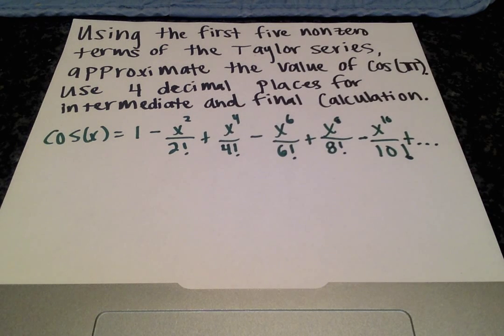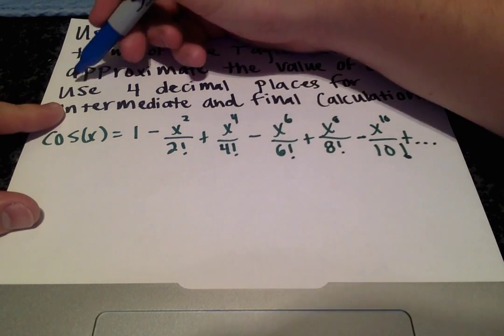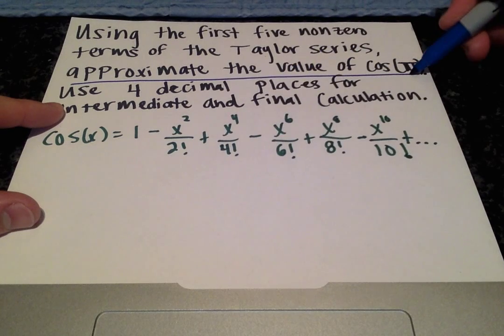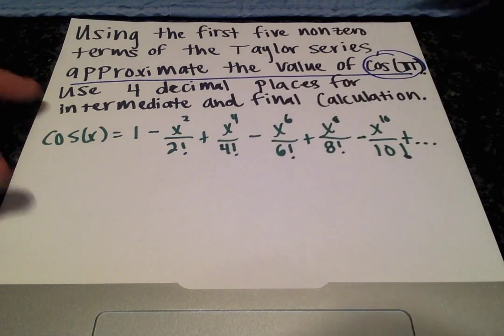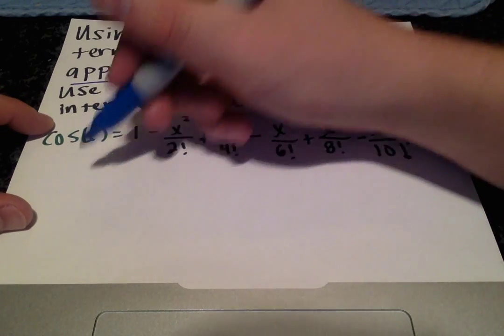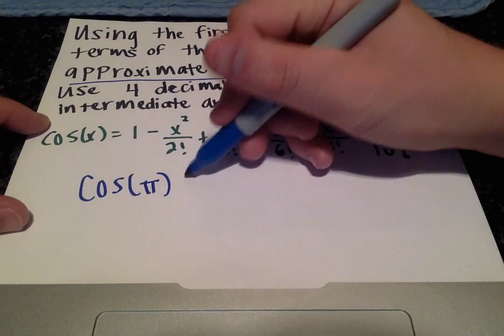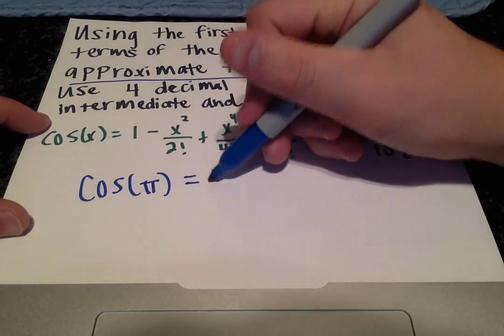Okay, and we are told to calculate or approximate the value cosine of π. All right, so we know that the actual value, just from trigonometry, the actual value of cosine of π is negative 1.